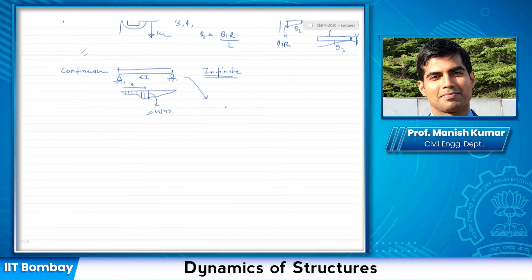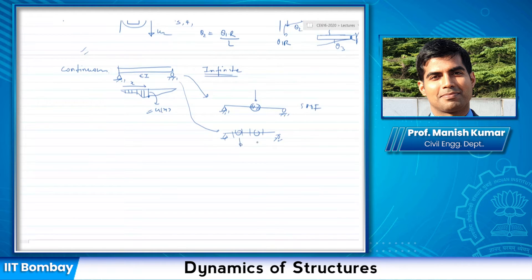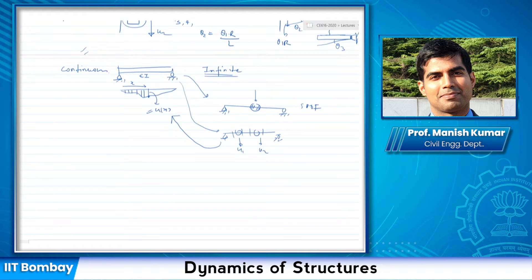Many people represent it through a single degree of freedom system, where they lump all the masses at the center of the beam. You could also consider it as a two degree of freedom system, representing the beam through two masses, requiring U1 and U2. Making it infinite degrees of freedom again means you represent it as U(x). Remember: a continuous system has infinite degrees of freedom.